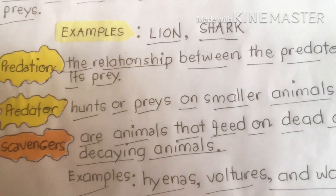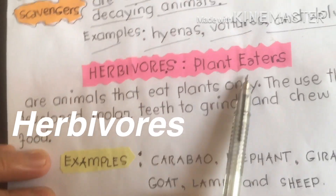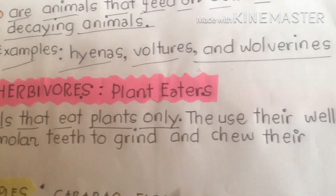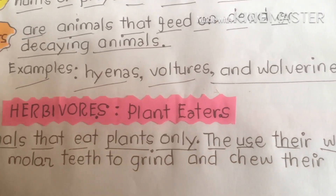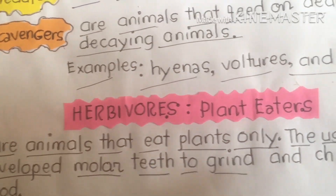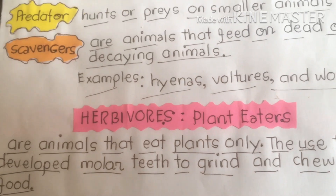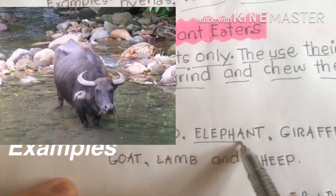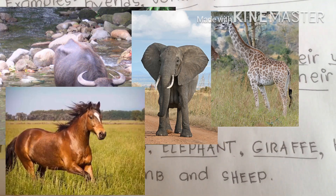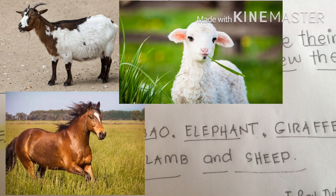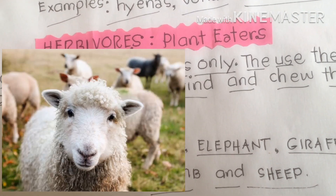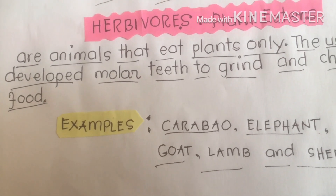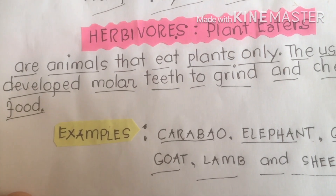Herbivores are what we call plant eaters — animals that eat plants only. For example, carabaos use their well-developed molar teeth to grind and chew their food. Their teeth are very flat and well-developed. Examples of herbivores include carabao, elephant, giraffe, horse, goat, lamb, and sheep. These are herbivores — they have well-developed molars to chew and grind their food thoroughly.